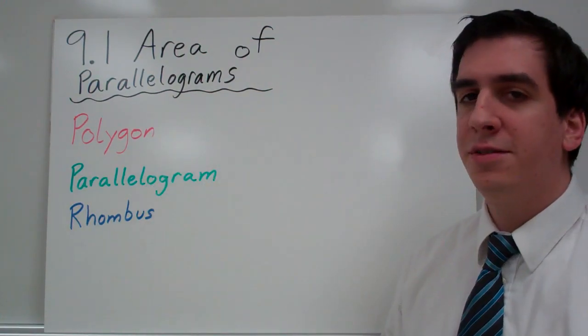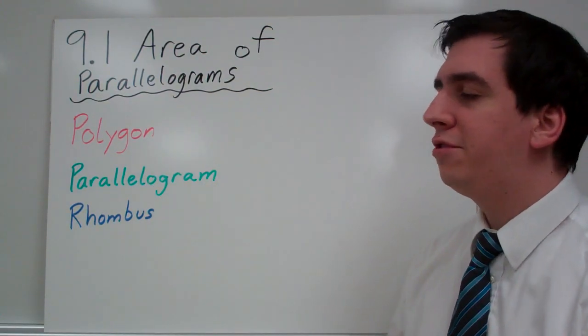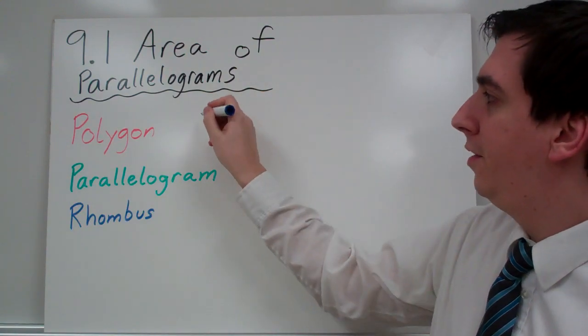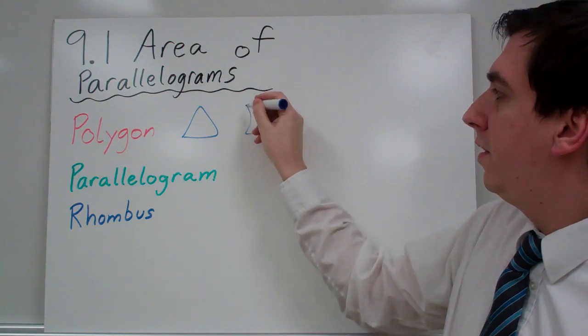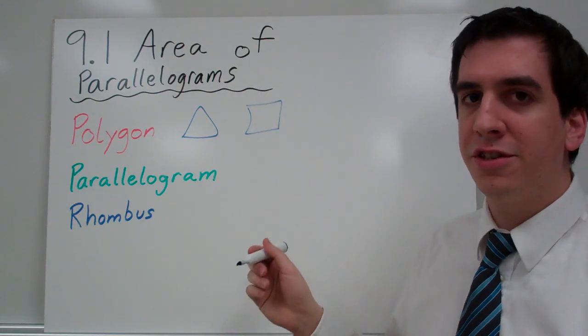The first definition that we're going to look at is polygon. A polygon is any closed shape. Let's just draw a few of them. Here's a polygon. Here's another one. If you can think of more, just go ahead and draw more.